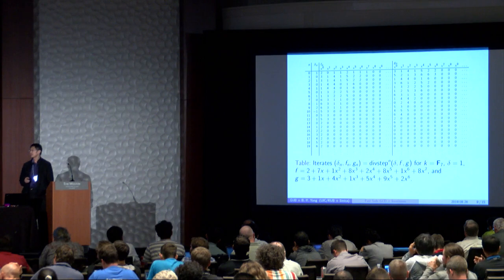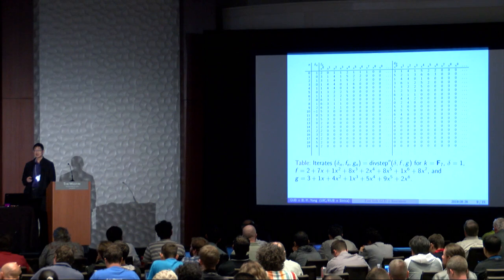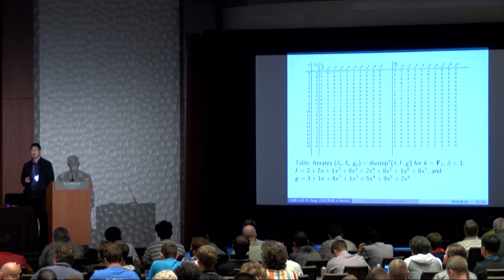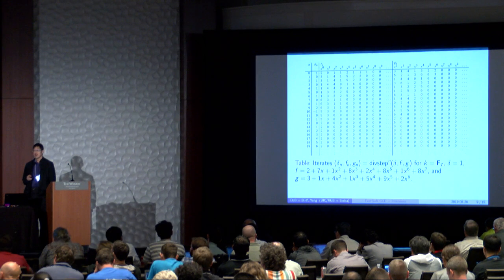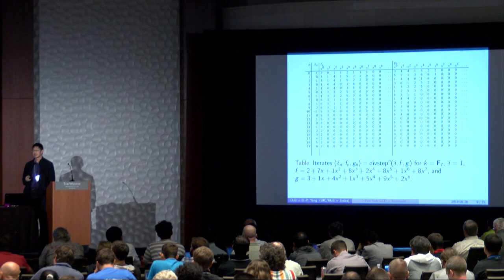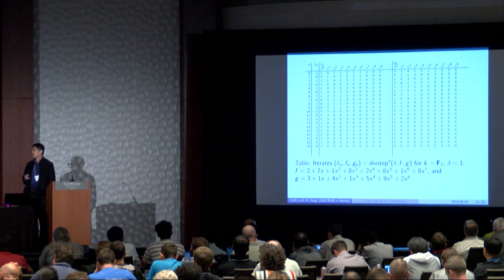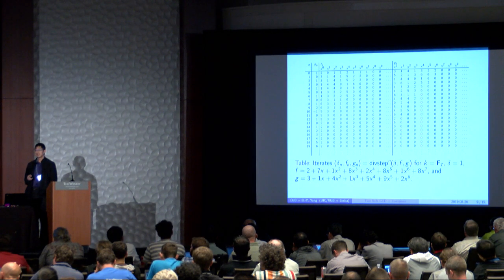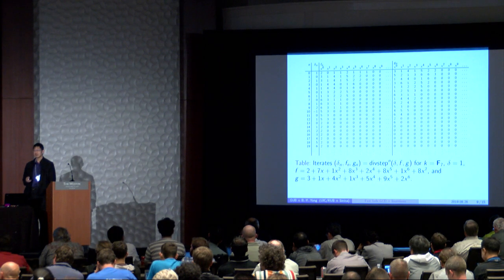So this is the example we gave. And please notice that we start out with one polynomial of degree 7 and one polynomial of degree 6. And after 13 terms, F stays constant. After 14 attempts, we have a zero for G. So like I said, after 2D minus 1 divsteps, we have the result.